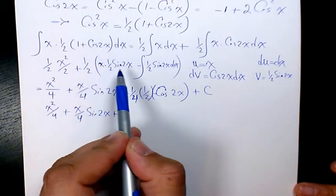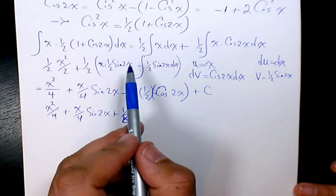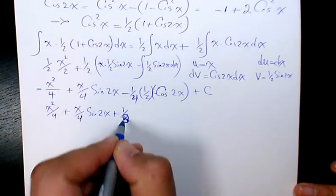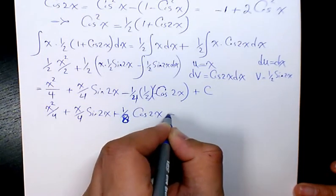Because we have one over 2 and the other one over 2 here, and when you integrate it, it's going to be another half. So half times half times half is going to be 1 over 8 cosine 2x plus C.